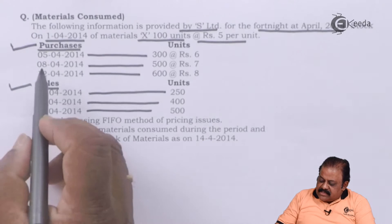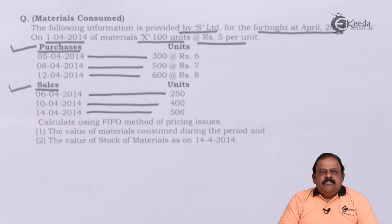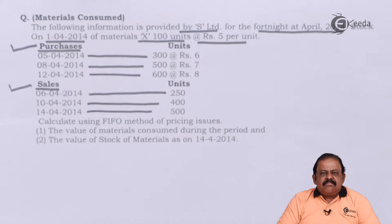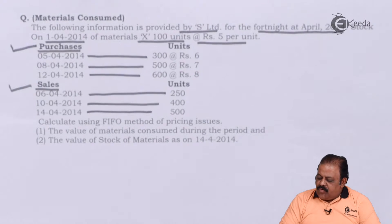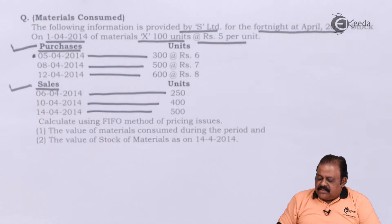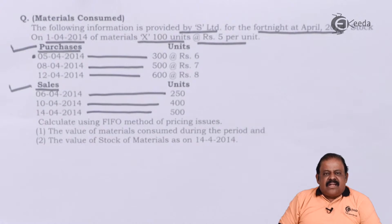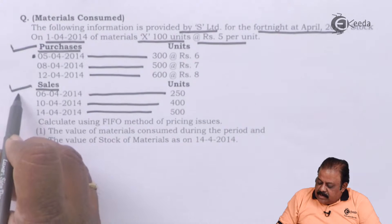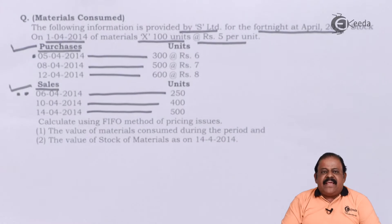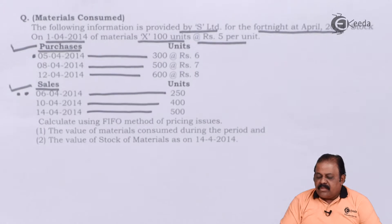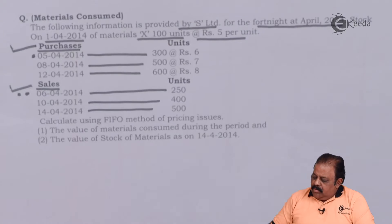We are required to record transactions on a day-to-day, date-wise basis. So we need to keep track of dates of purchase and sales. For example, on 5th there is a purchase, and the next transaction is a sale on 6th April. If we miss any date, we cannot prepare our stock ledger correctly. Let us proceed to prepare the stock ledger.